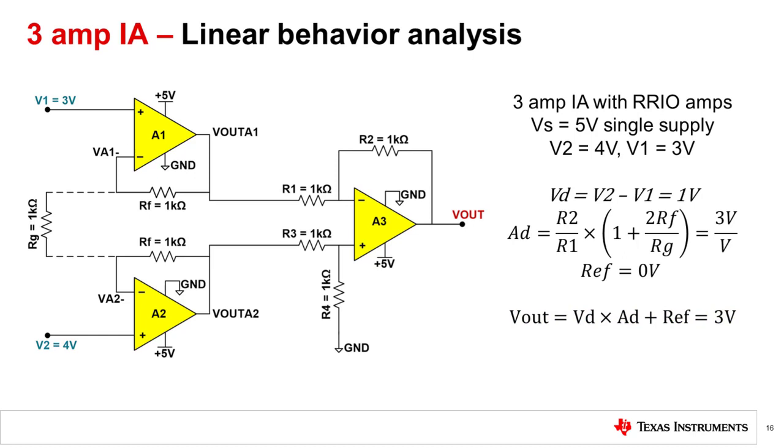At first glance, it would appear that these voltages are all within linear range. But remember, we need to make sure that the inputs and outputs of each amplifier in the circuit is within linear range, not just the input and output of the whole circuit.